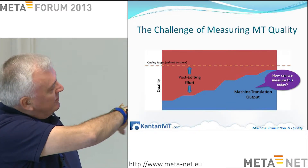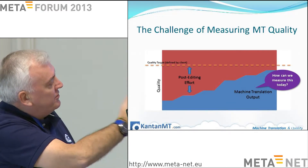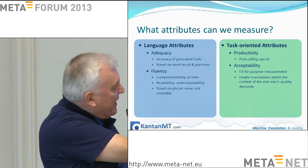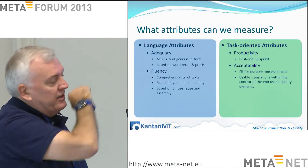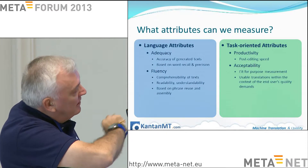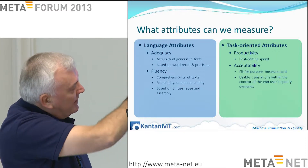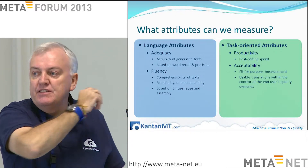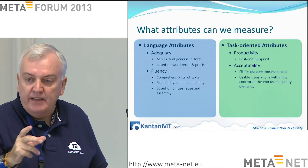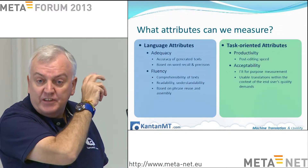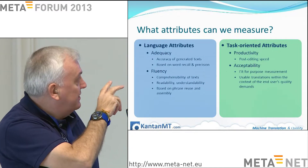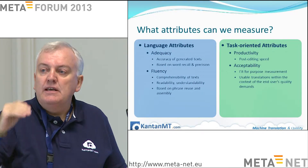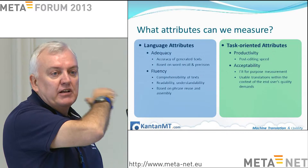The bottom blue section represents the output that machine translation currently makes. The gap between bad machine translation and the accepted quality can be big, or if you do it right, can be narrow. That red post-editing effort is difficult to measure and quantify at the minute — and that's what we want to try and do with KantanMT Analytics. That quality target is no longer an absolute.